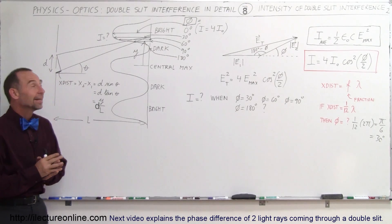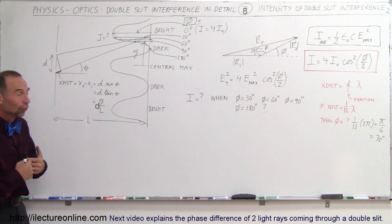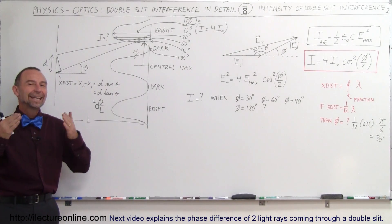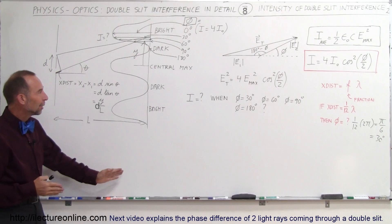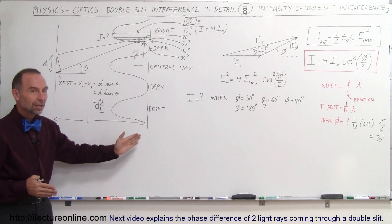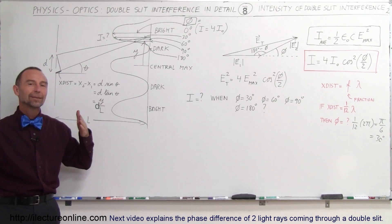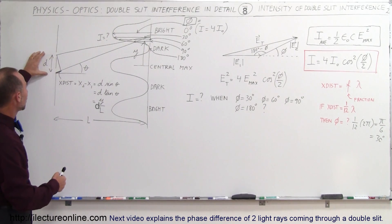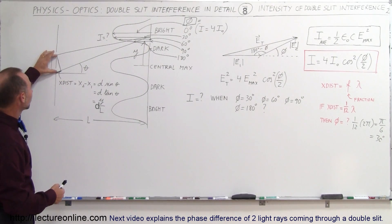Welcome to Electron Line. Now we're going to show you some examples of how to find the intensity along the screen when two light beams come together that have just emerged from a double slit.